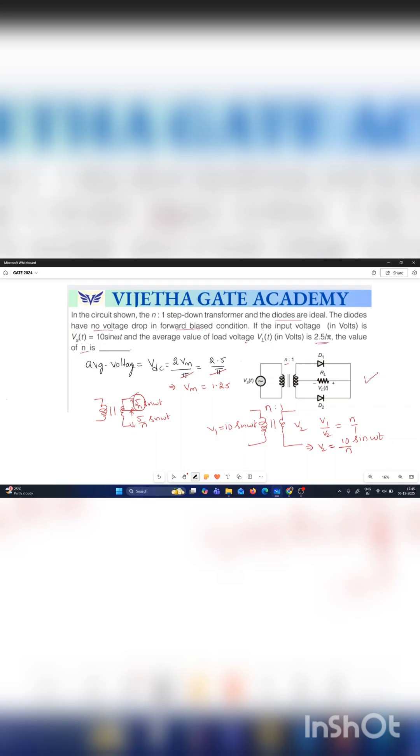First, based on the given value, the average value of full wave rectifier, average voltage means we can take it as the DC voltage. VDC is equal to 2 into Vm by pi. This is the formula for full wave rectifier. 2Vm by pi is equal to 2.5 by pi. Pi gets cancelled and you will get Vm is equal to 1.25 volts.